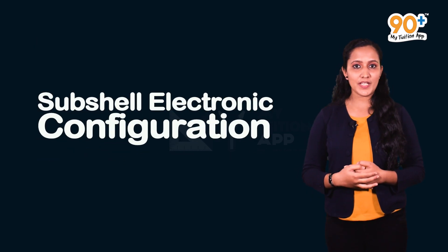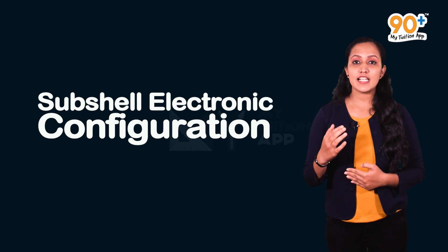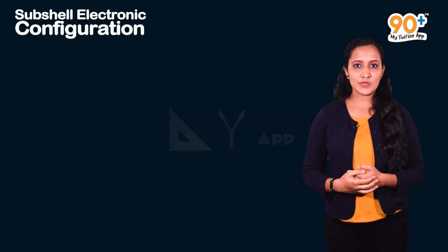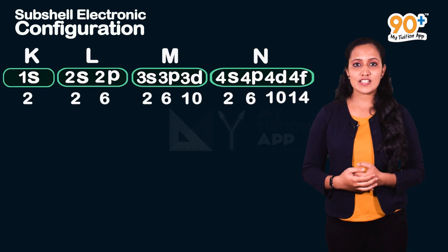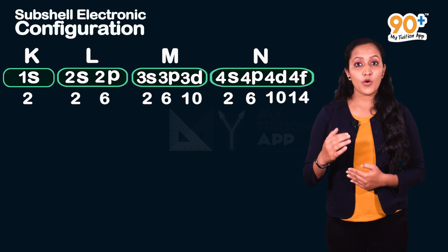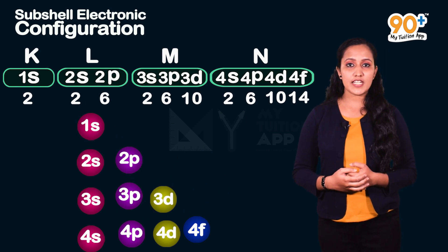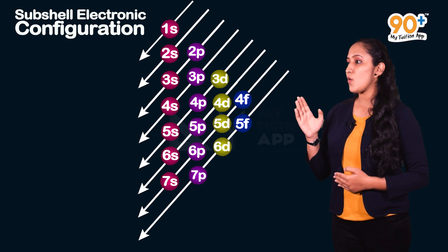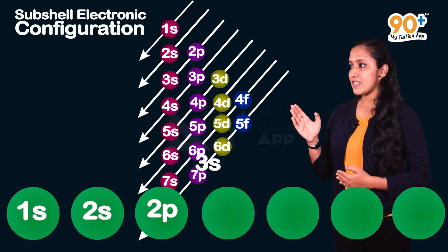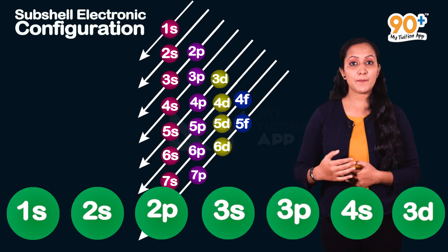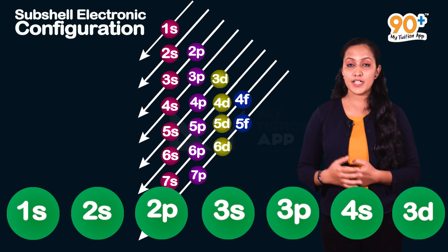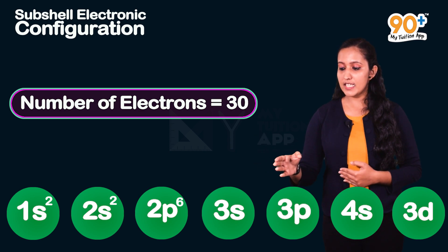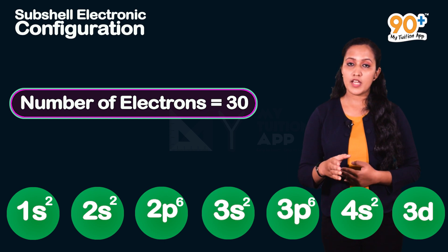Moving on to the second important topic: subshell electronic configuration. Subshells are filled in order: 1s, 2s, 2p, 3s, 3p, 4s, 3d. Each subshell is filled to its maximum capacity. For example, an atom with 30 electrons is filled as: 1s², 2s², 2p⁶, 3s², 3p⁶, 4s², 3d¹⁰.